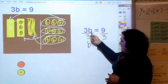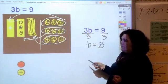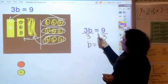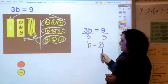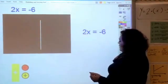To get b by itself, you divide by the number that's with the b, and what you do to one side you do to the other, and you get what b is equal to. Let's look at this one: I have 2x.